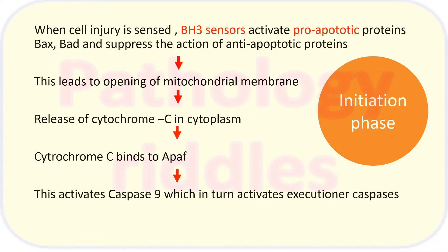As cytochrome C is located between those mitochondrial membranes, it will enter the cytoplasm. Cytochrome C then combines with APAF-1, which activates caspase 9, which in turn activates the executioner caspases. This was the initiation phase — from cell injury to activation of executioner caspases by caspase 9.